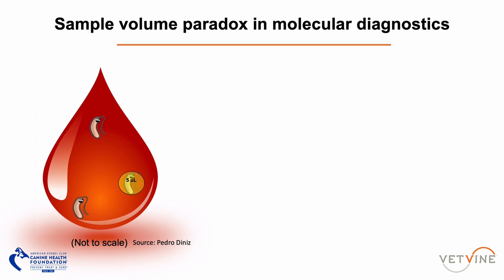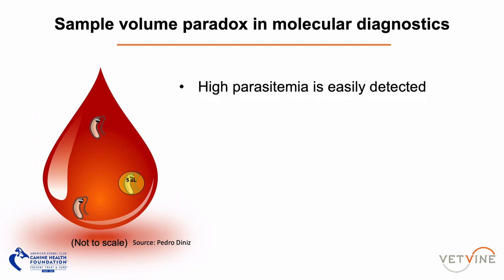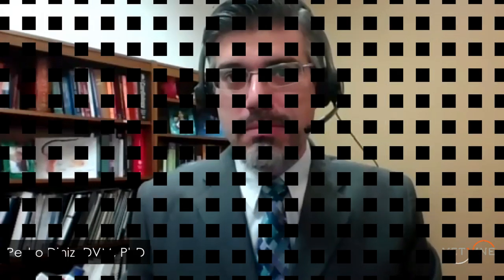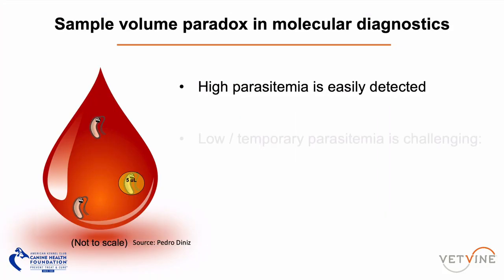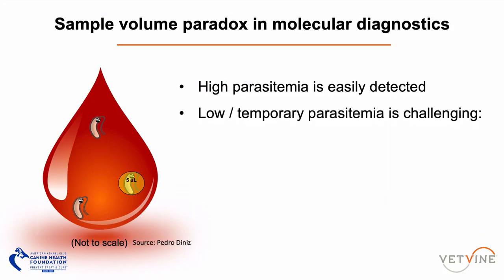In diseases that have high parasitemia — thousands of organisms in the bloodstream 24/7 — molecular diagnostic tests can easily detect it. But if you're dealing with low or transient parasitemia, then it's challenging.